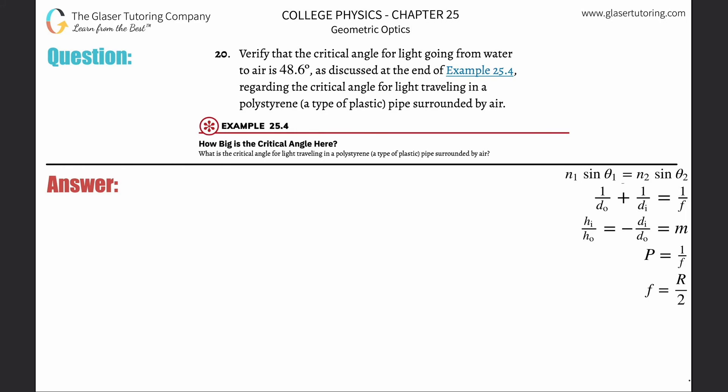Number 20, verify that the critical angle for light going from water to air is 48.6 degrees as discussed at the end of example 25.4.